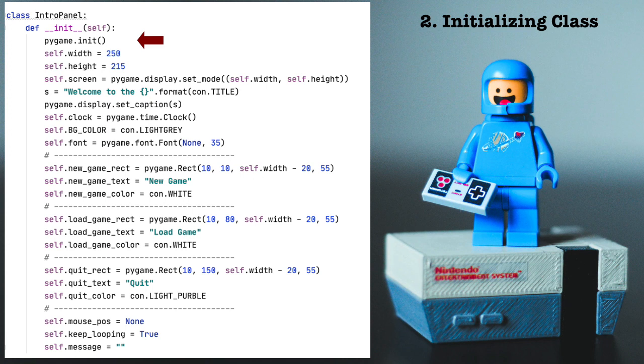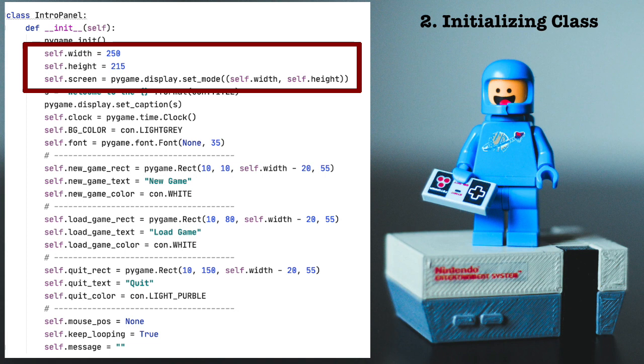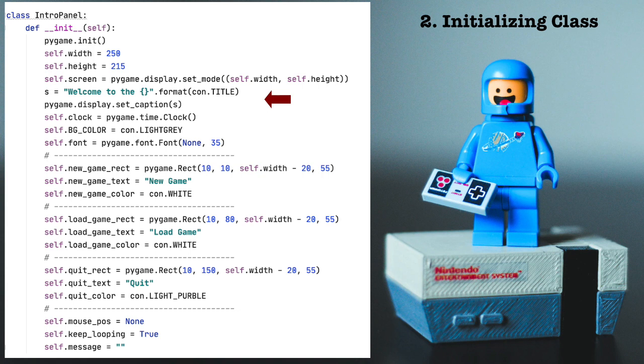I'll step through this more or less line by line. First, we initialize Pygame with the line Pygame init. Then we resize the screen, giving it both a width and a height. Now, it's a nice touch to give the window a caption. So that's the line there, PygameDisplaySetCaption. Also, I want to set the background color of the window to light gray. I'm setting this here in init and then using it in the draw function, which we're going to cover just a little bit later. I use it in the fill command. I'm doing it this way because I like to set all the values I'm going to use throughout the class inside of the init function. It makes reading the code and therefore debugging the code easier, or at least that's what I find.